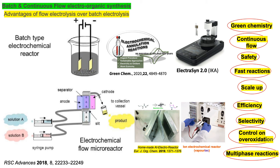Batch and continuous flow electro-organic synthesis: advantages of flow electrolysis over batch electrolysis. Batch electro-organic synthesis can be performed in a beaker, flask, or in a modern batch electrochemical reactor such as Electrasin 2. However, flow electro-organic synthesis needs a micro flow reactor, such as a homemade aluminium-based electrochemical reactor or an iron electrochemical reactor type.